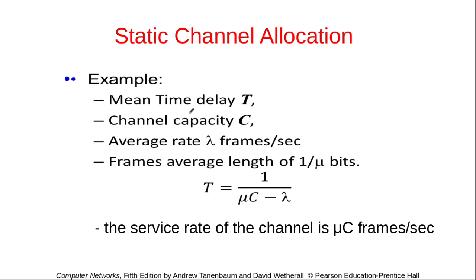To better understand this, let us consider one example. We will calculate the mean time delay T, considering this as a queuing system where arriving frames are being processed by different servers. The channel capacity is assumed to be C, the average arrival rate is lambda frames per second, and the average frame length is 1/mu bits. So the average rate at which frames are serviced is mu*C frames per second. From queuing theory, the mean time delay T can be calculated as 1 / (mu*C − lambda).